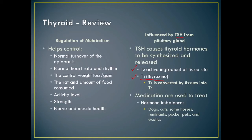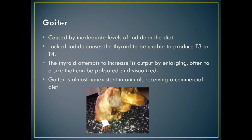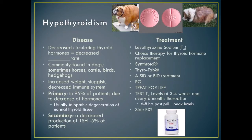Hypothyroidism — seen in dogs, horses, cattle, birds, and hedgehogs — decreases metabolic rate. Signs include increased weight, sluggishness, and decreased immune function. In 95% of patients it is due to idiopathic degeneration of normal thyroid tissue. Secondarily, it can be due to decreased TSH production in about 5% of patients. We supplement with T4 — usually levothyroxine, sold as Thyroid, Synthroid, or Thyro-Tabs — given once or twice a day, typically twice daily, for life.